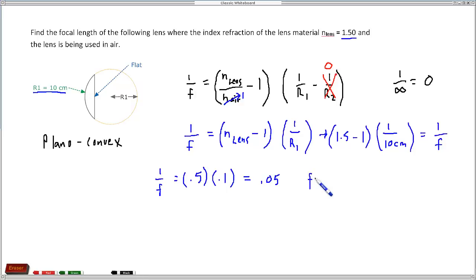So really the focal length is going to be the reciprocal of 1 over the focal length, which is going to be the reciprocal of 0.05, which equals 20, and our units are centimeters. So this is our answer, 20 centimeters for the focal length.